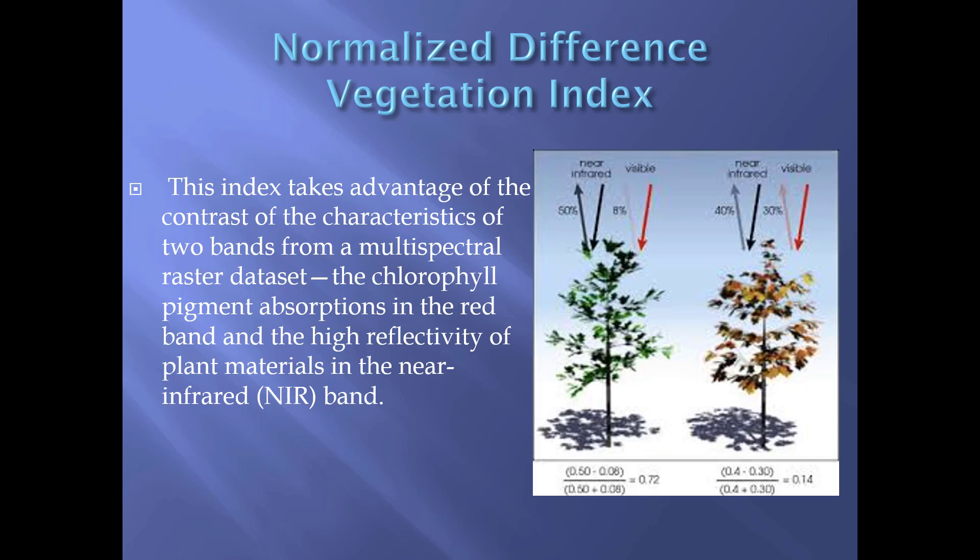In contrast, an unhealthy, dying, senescent, browning, or stressed tree is going to reflect more of the visible wavelength in the red portion because it's not using it for photosynthesis, and it has a lower reflection of the near infrared. The equations at the bottom of the image show how the index is derived.